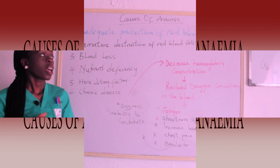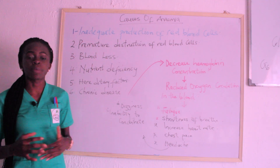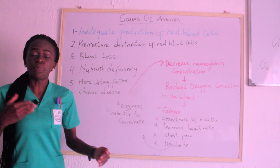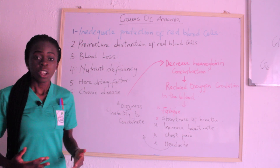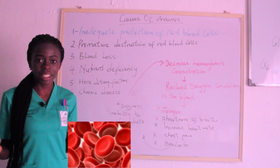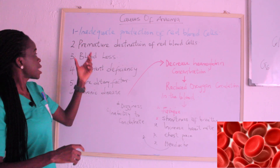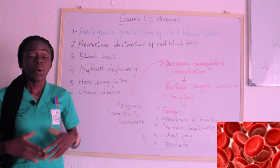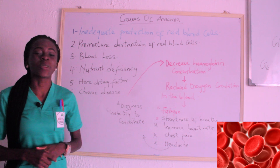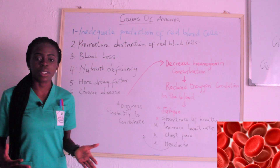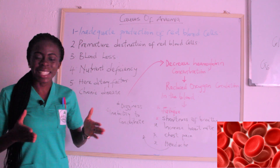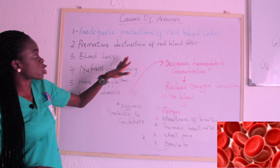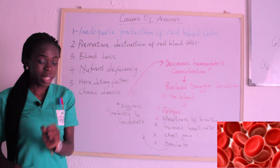The causes of anemia: the first is inadequate production of red blood cells, meaning the bone marrow is not producing enough red blood cells, so there is no hemoglobin and anemia takes place. The second is premature destruction of red blood cells — red blood cells ought to live for 120 days, but when they die before that, as in sickle cell disease or glucose-6-phosphate dehydrogenase deficiency, it leads to anemia.